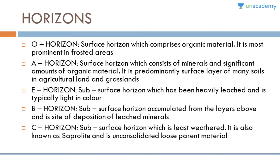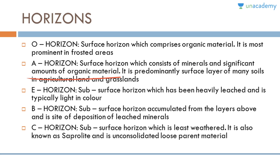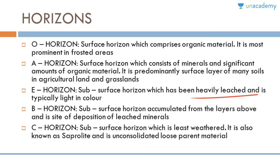A horizon is a distinguishable layer of soil with different characteristics. There are primarily five layers or horizons arranged from top to bottom. The first is the O horizon, the surface horizon comprising organic material, most prominent in forested areas. Next is the A horizon, also a surface horizon consisting of minerals and significant amounts of organic material. It is the predominantly surface layer of many soils in agricultural land and grasslands. The E horizon is a subsurface horizon that has been heavily leached and is typically light in color.